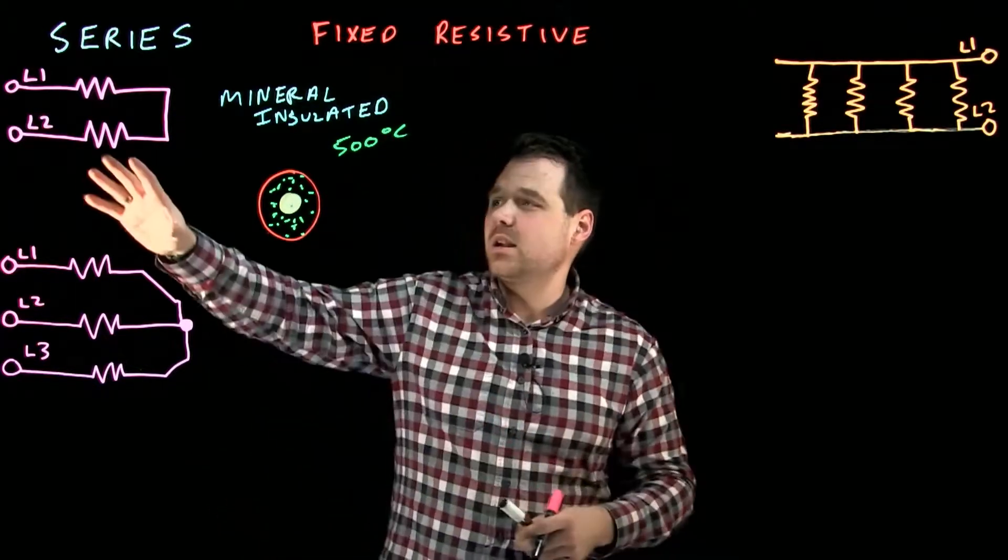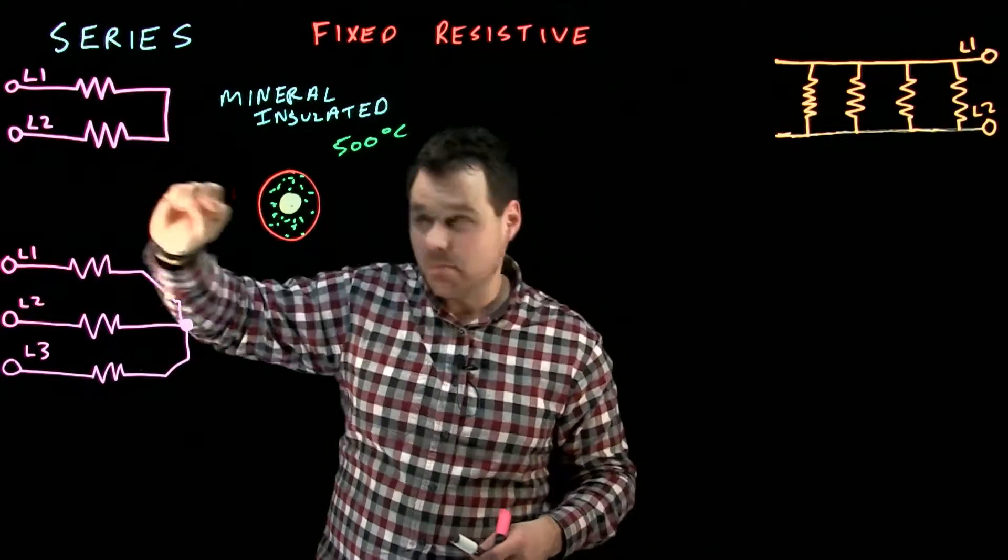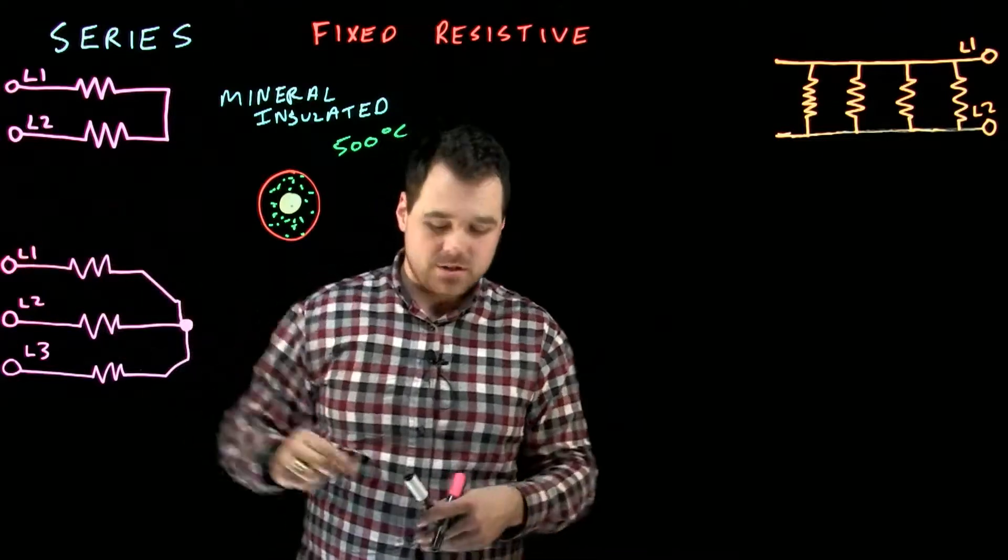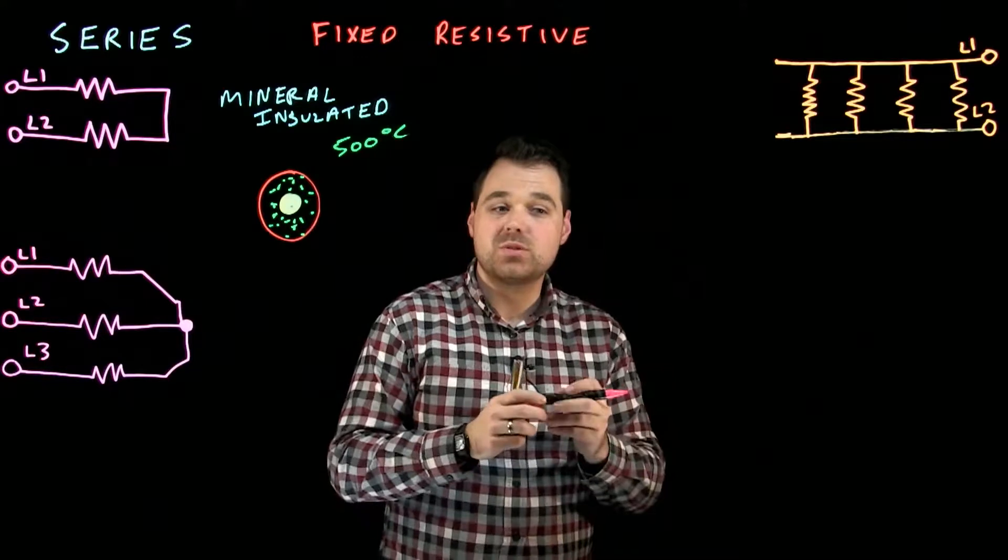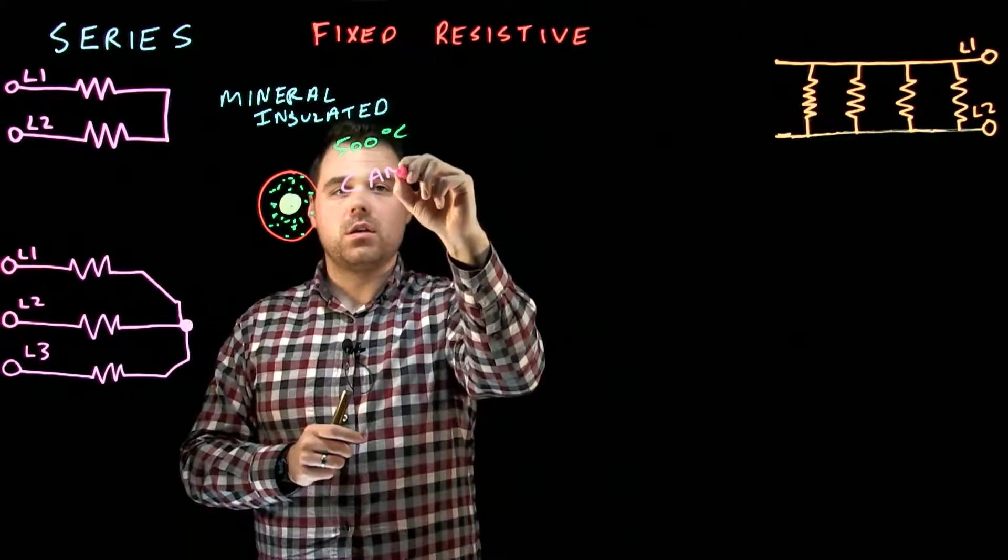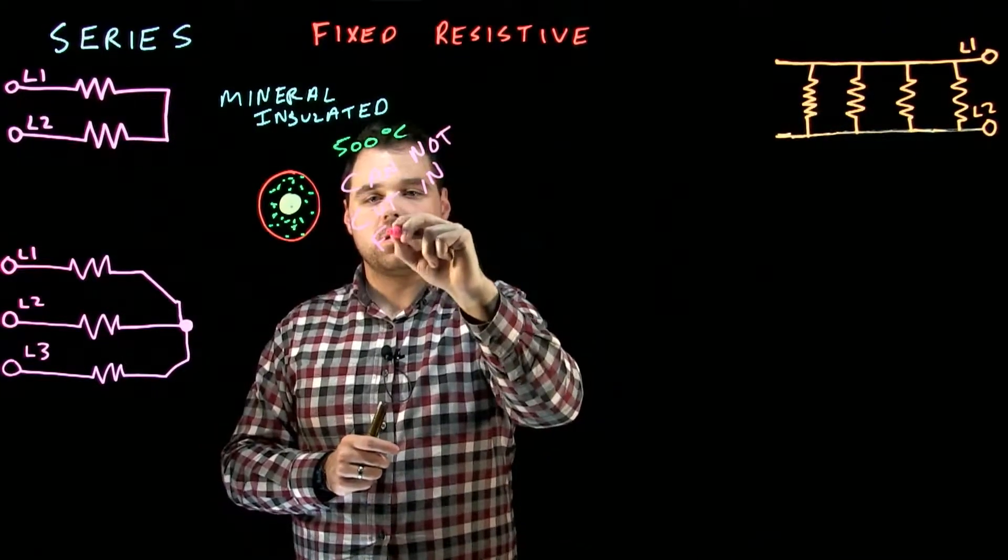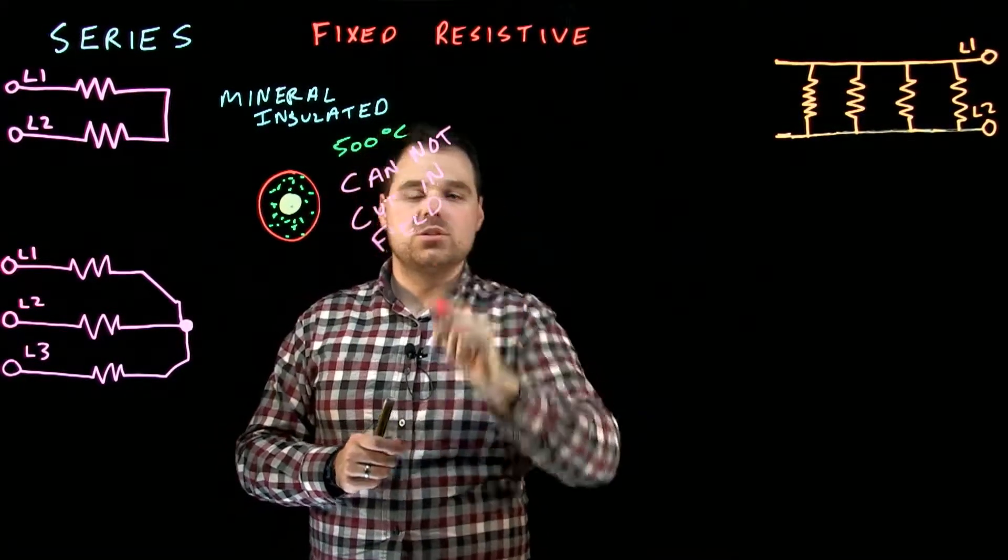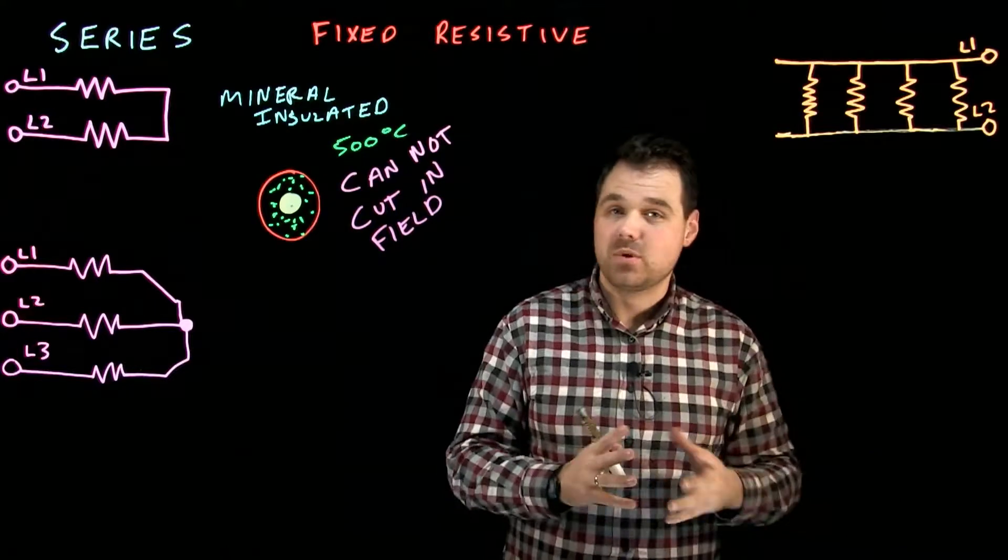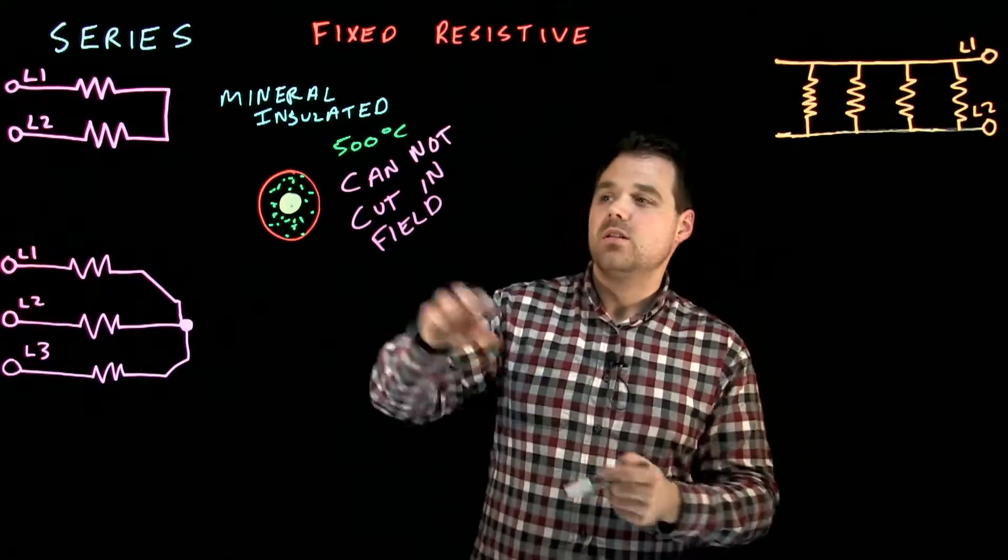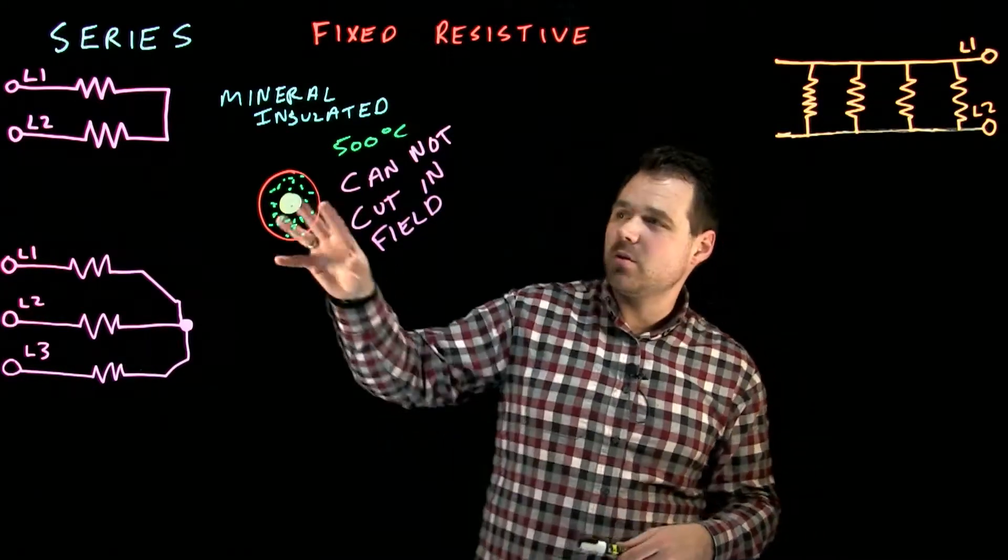We often see that in a configuration like this, where we'll start at line one, go out to line two. There'll be a junction at the end, or it'll come back and join to line two. So a couple of things that are very important to MI is you cannot cut. You cannot cut in field. So you actually cannot cut it out in the field. You have to order it to the right length. If you have too much, you have to coil it up. You can't just cut it in the field. There will be a reaction that has to be capped off correctly. So that's mineral insulated.